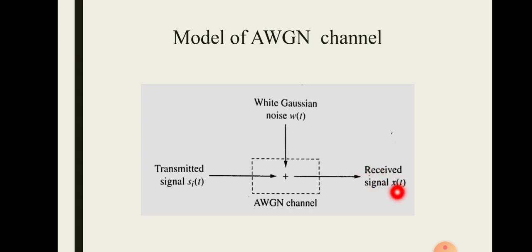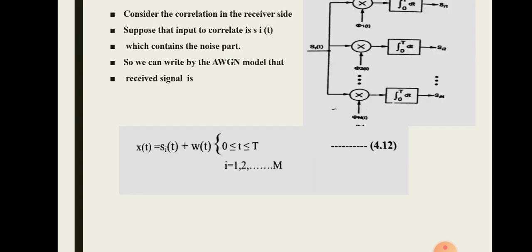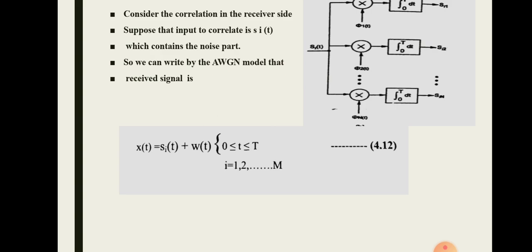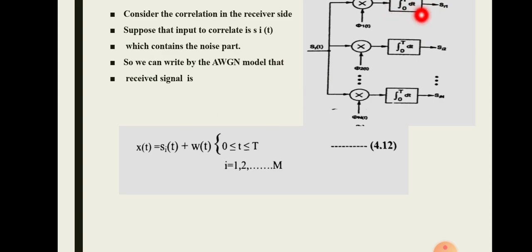We have studied the representation of signal reception at the receiver side using this model. Whenever we transmit a signal si(t) and there is no noise, the received signal is si(t). It is multiplied by the corresponding orthonormal basis function and then integrated by an integrator or correlator, giving us different vector components of the signal.